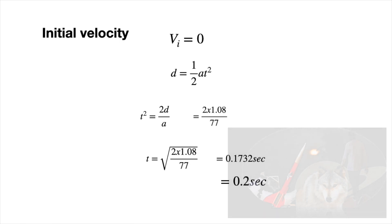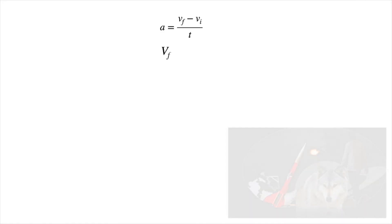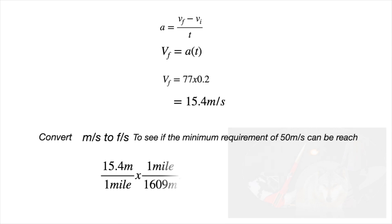Now these values help us determine the exit rail velocity. We can calculate the exit rail velocity using acceleration equals final velocity minus initial velocity divided by time. Remember, initial velocity is still zero since the rocket begins at rest. We can rearrange the equation to become final velocity equals acceleration multiplied by time. Final velocity equals 77 meters per second squared multiplied by 0.2 seconds, giving us 15.4 meters per second.